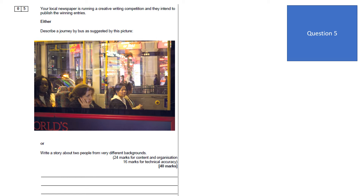We've got another video for you to learn how to write for Question 5. Today we're going to go through the marking so you understand what the examiner is looking for. It doesn't matter which choice you go for — you'll either be given a picture or a story idea. Generally, one will be a descriptive piece and the other a story. Descriptive pieces are usually easier to write because they allow you to be more controlled.